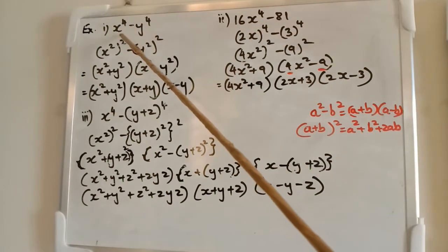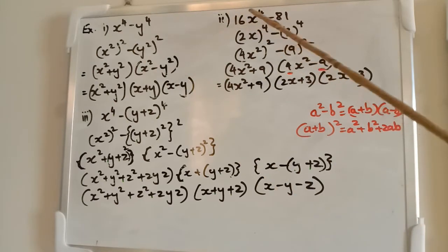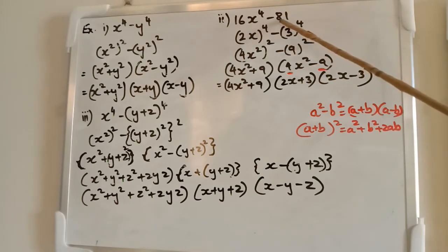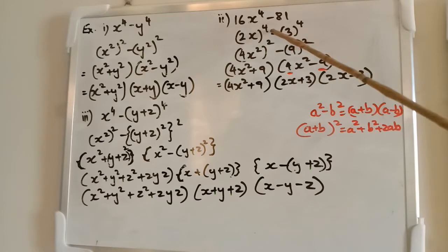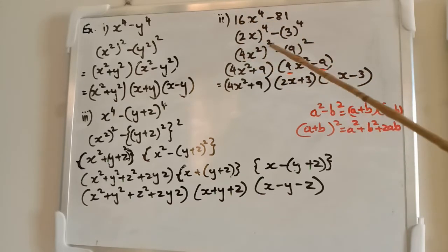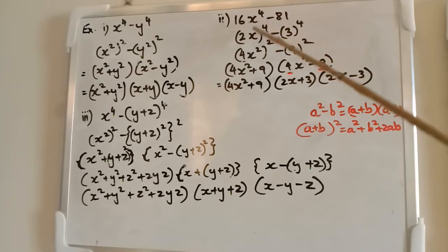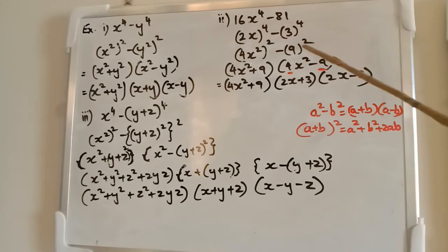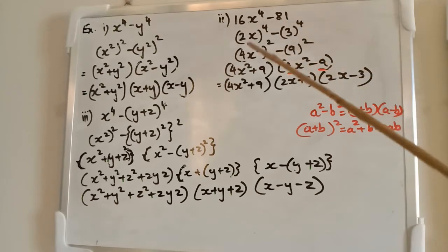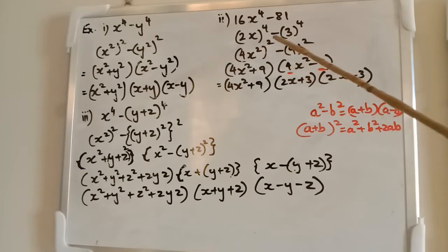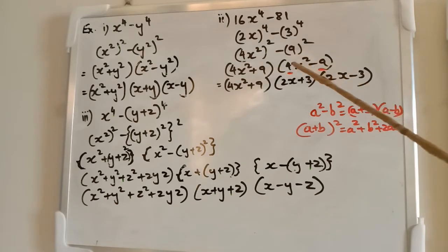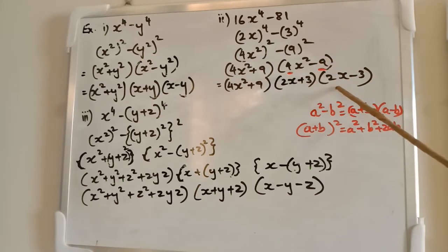Next question — another form of the same question except it has numerical coefficients. That is 16x raised to the power of 4 minus 81. What is 16? 2 raised to the power of 4 is 16, or 4 square is 16. So, 2x raised to the power of 4 minus 3 raised to the power of 4. 3 raised to the power of 4 also gives 9 square, since 9 into 9 is 81. So it can be presented as 4x square whole square minus 9 square, giving 4x square plus 9 into 4x square minus 9. This again becomes 2x whole square minus 3 square, that is 2x plus 3 into 2x minus 3.